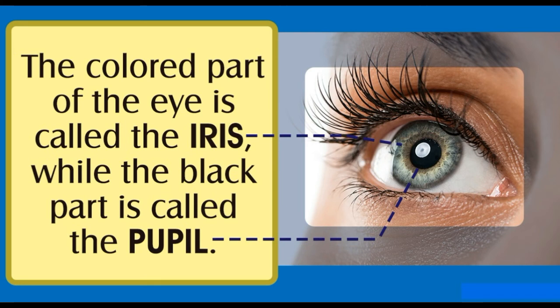The lens does so by changing its shape depending upon whether the light is coming from a distant or a close-by object. Number four — the focused light then passes through the vitreous humor and is finally projected on the retinal membrane containing the photoreceptor cells. The rods and the cones of the retina convert the light rays into electrical impulses. Number five — these electrical signals are transmitted by the optic nerve to reach the visual center in the brain. The brain interprets and perceives these signals as an image.